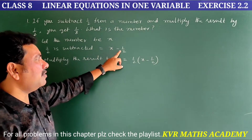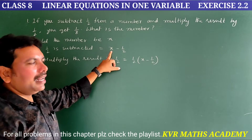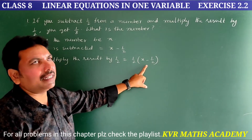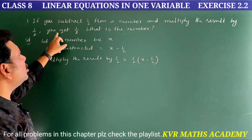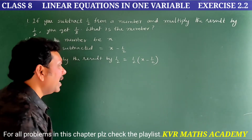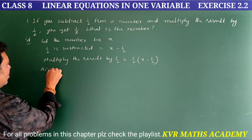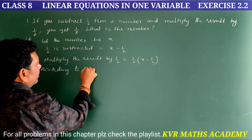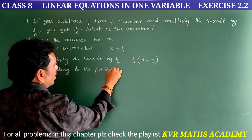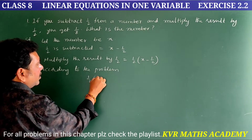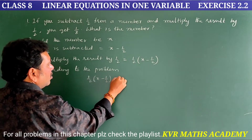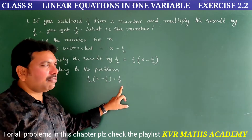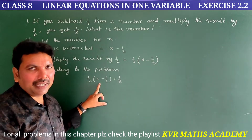And multiply the result by 1/2, which means 1/2 into (x minus 1/2). First, half is subtracted from the number; next, we multiply the total result by half. And then what is given? You get 1/8. According to the problem: 1/2 × (x − 1/2) = 1/8.